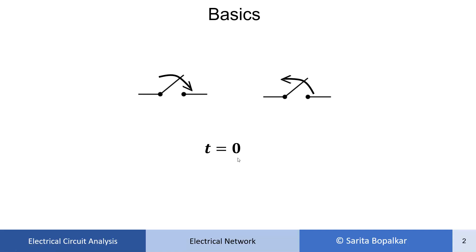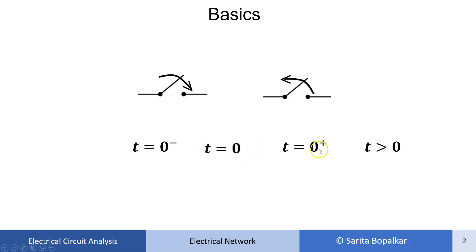For different types of examples based on transient analysis, we have to draw the equivalent circuit at t equal to 0 minus, t equal to 0 plus, and for t greater than 0. T equal to 0 minus means just before the switching action happens, and t equal to 0 plus means just after the switching action happens.